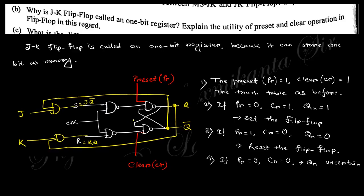The next sub-question asks: explain the utility of preset and clear operations in a flip-flop. In the JK flip-flop, preset and clear are used as follows: when preset is 0, the output is 1 — this sets the flip-flop, meaning the output becomes 1. When clear is 0, the output is 0 — this resets the flip-flop, meaning the output becomes 0. Using preset and clear, you can set or reset the flip-flop, which is important in the one-bit register configuration.